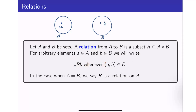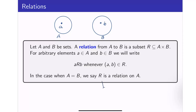Now, in the case wherein the sets A and B are the same or they are equal, we say that R is a relation on A. When we have R is a relation on A, it actually means that your set R is a subset of A cross A because the elements of R are ordered pairs.